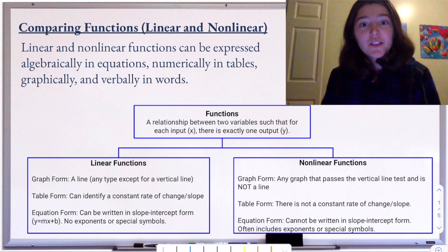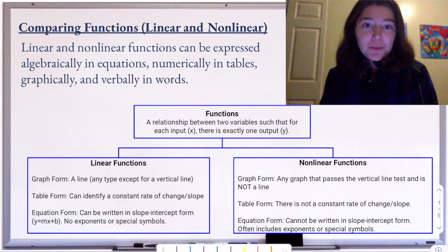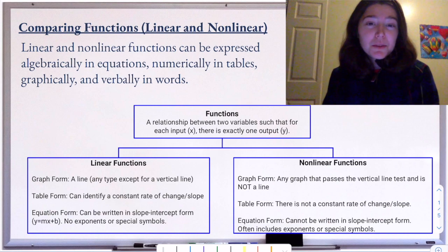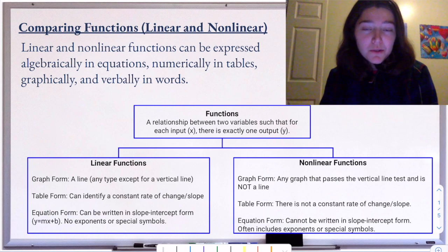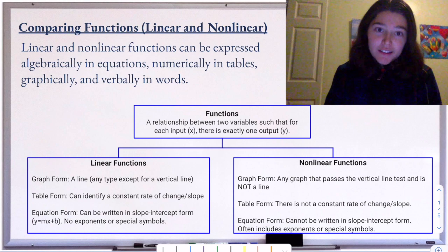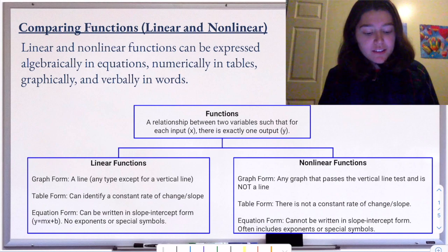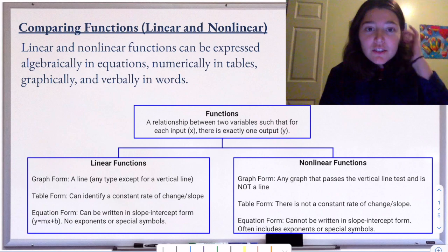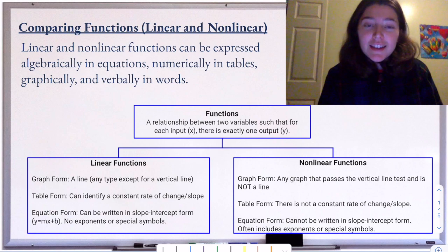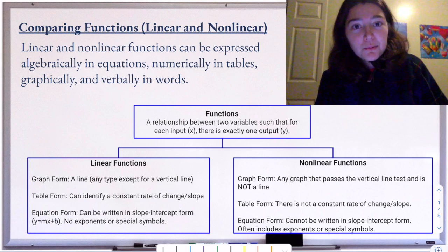Linear functions are those that look like a line when we graph them. There's a constant rate of change that becomes the slope in graph form, and we can write them in equation form in slope-intercept form, y equals mx plus b. A nonlinear function will still pass the vertical line test, but there's not a constant rate of change — it's not going to look like a line when we graph it.